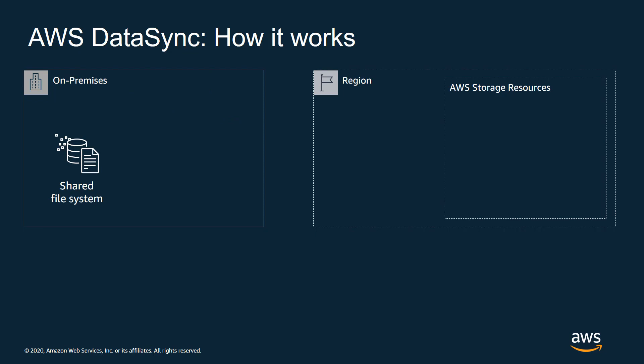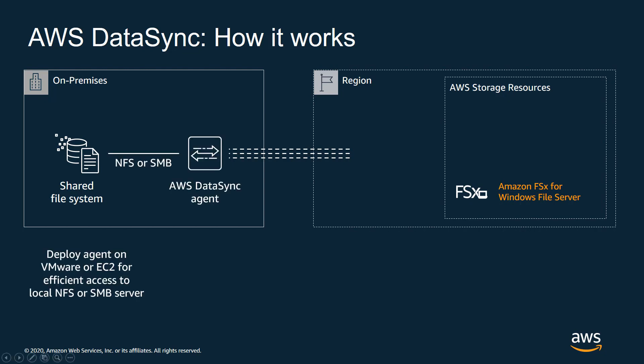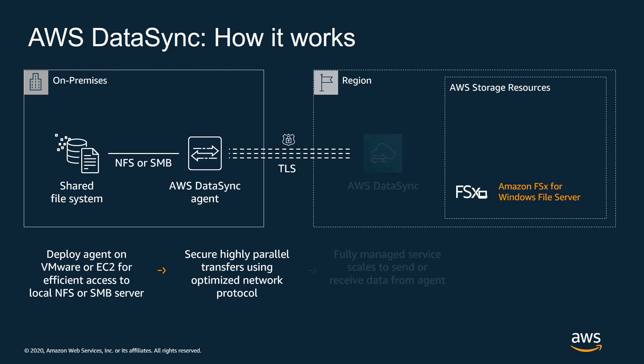So how does AWS DataSync work? Let's say you have your on-premises file servers on the left, and then you set up your AWS environment. You create your Amazon FSx for Windows File Server file system, and then you need network connectivity from your on-premises environment. This network connectivity can be over the internet to AWS, or it could be over Direct Connect or site-to-site VPN. We'll install the DataSync agent close to your file servers, and the connection between the DataSync agent and your on-premises file servers can be either NFS or SMB. The transfer occurs over a secure TLS connection using a highly optimized parallel transfer to speed up the data transfer from your on-premises network to the AWS cloud.